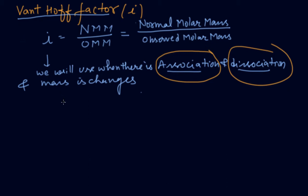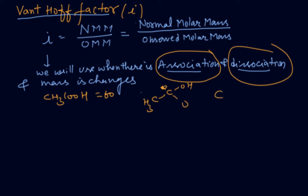For example, take acetic acid (ethanoic acid, CH₃COOH). Its molar mass is 60. When we take acetic acid, association takes place through hydrogen bonding, forming a dimer (CH₃COOH)₂.